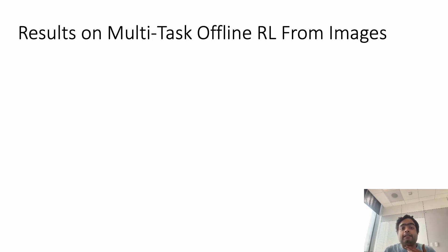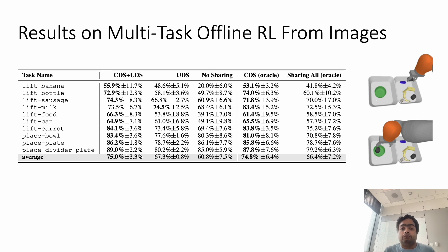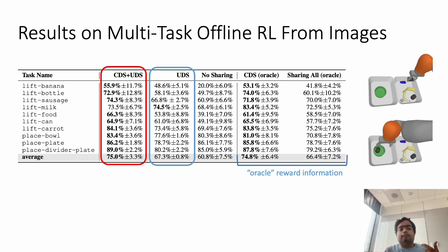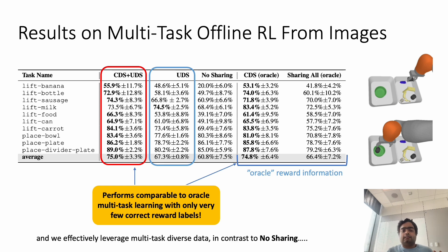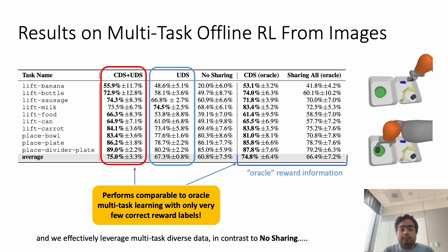We also evaluate on multitask offline RL problems where the agent must learn from raw visual observations at a much larger scale with many more tasks. Again, comparing to multitask RL methods with Oracle reward information, we find that CDS+UDS and UDS perform quite comparably to these Oracle methods. This is quite exciting — it shows we can leverage unlabeled data quite efficiently such that we can get away without actually labeling the whole unlabeled dataset, which can be quite tricky in practical robotics settings.